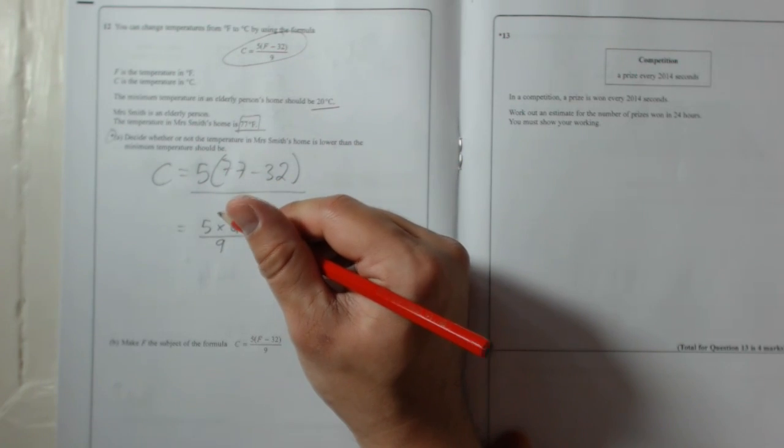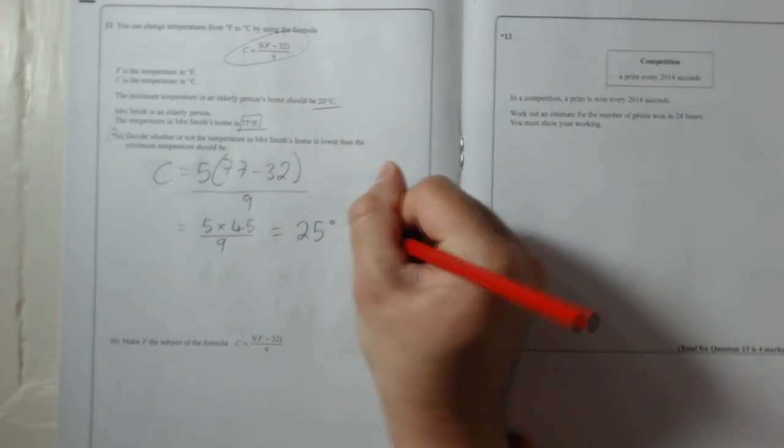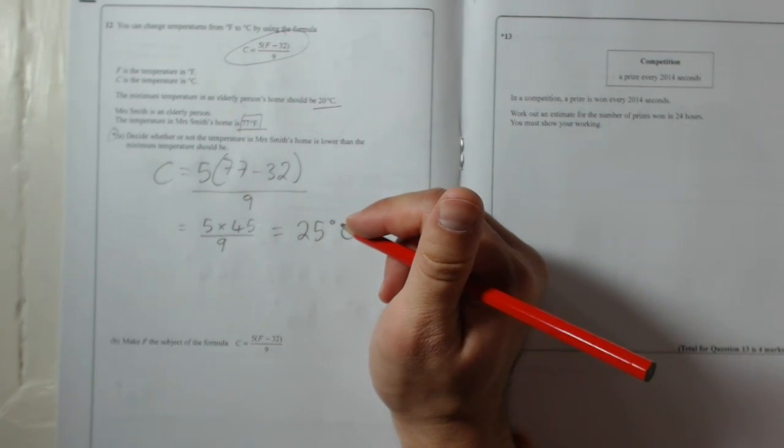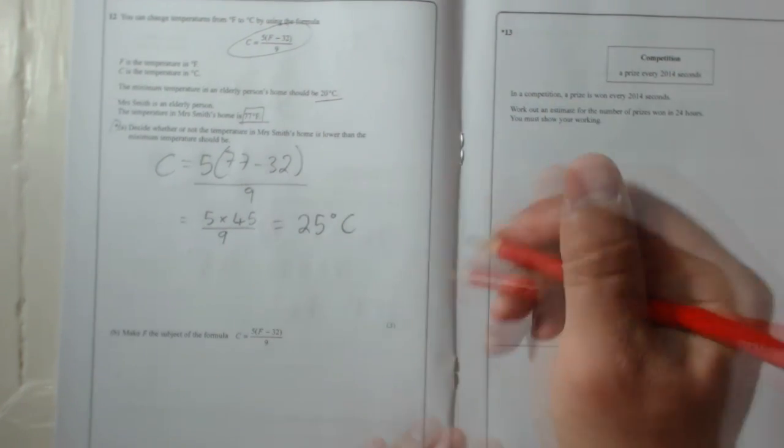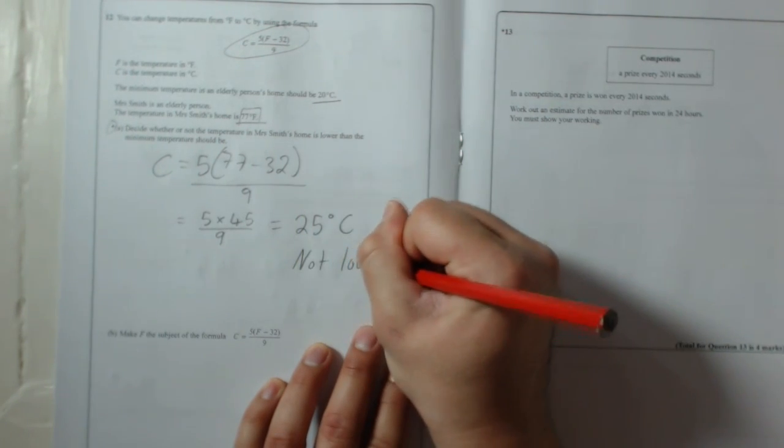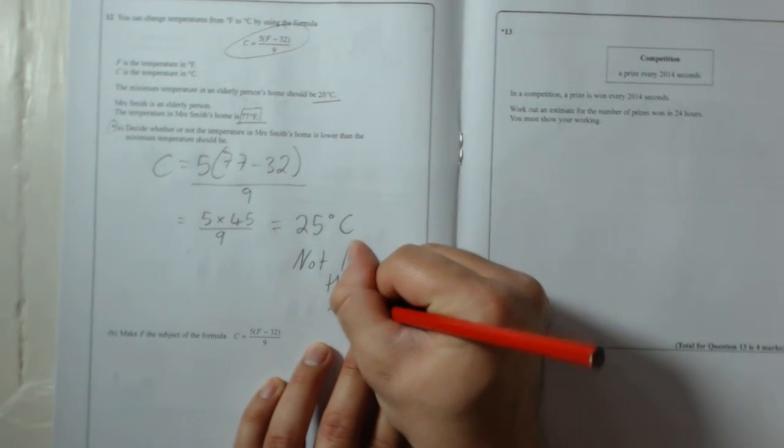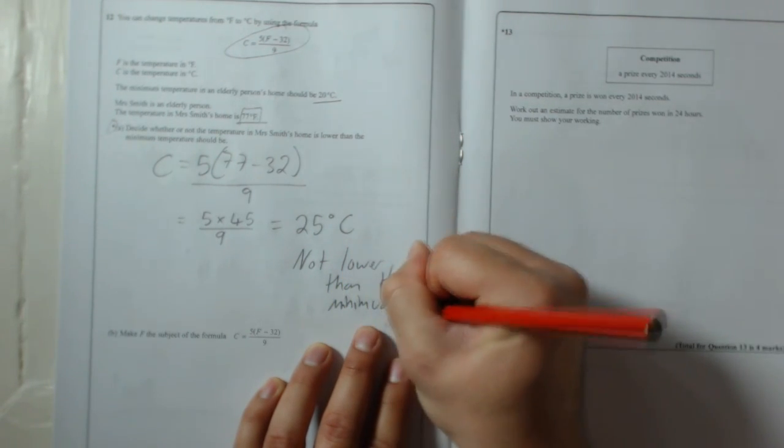So we just do 5 times 5. So the answer is 25 degrees Celsius. That means it is not lower than the minimum temperature. So let's put that, not lower than the minimum. Done.